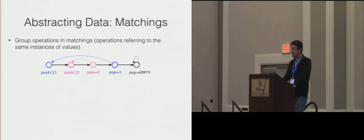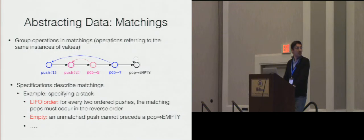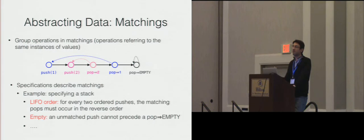Using the concept of matchings, the specifications of abstract data types will describe the matchings in an execution, not the individual operations with their input and output values. For specifying a stack, one property will say that for every two pushes in some order, the matching pops should be in the reverse order. Or, for the property of pop returning empty, the property will say that it is never preceded by an unmatched push.